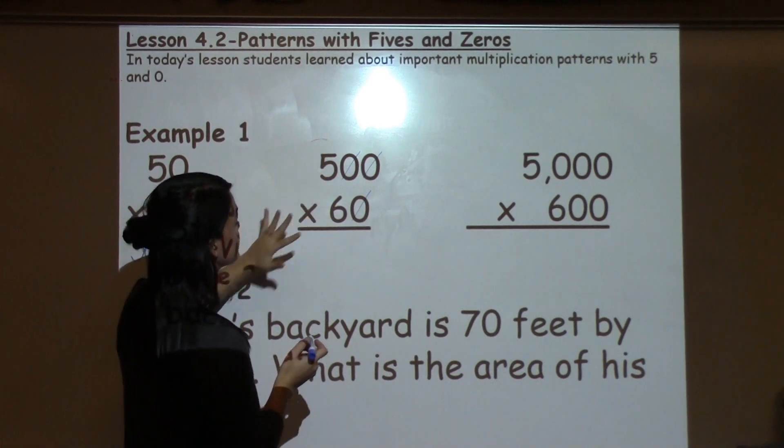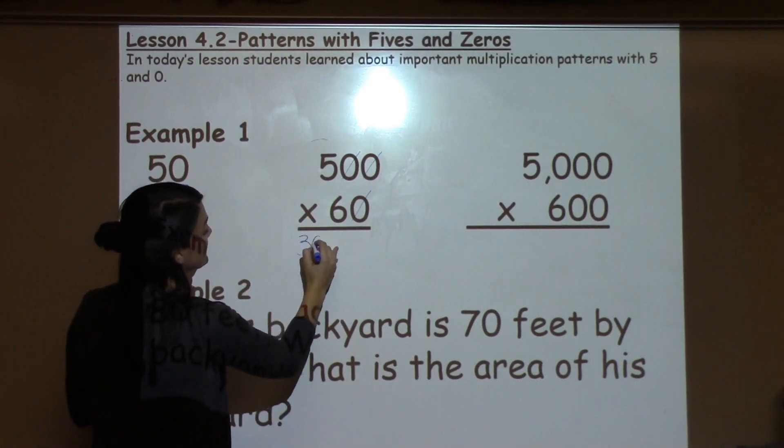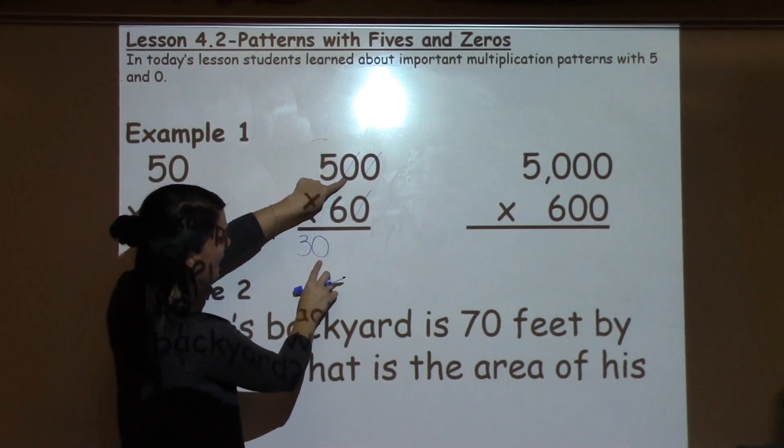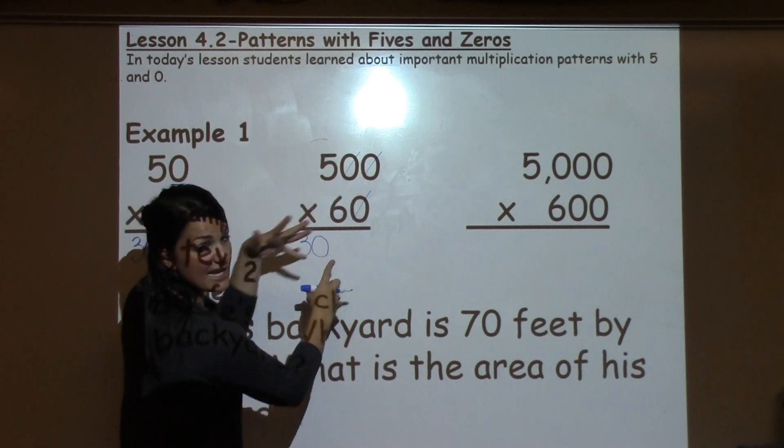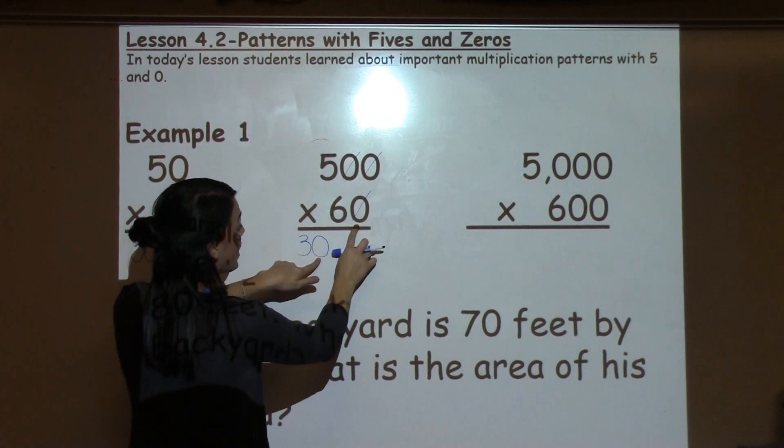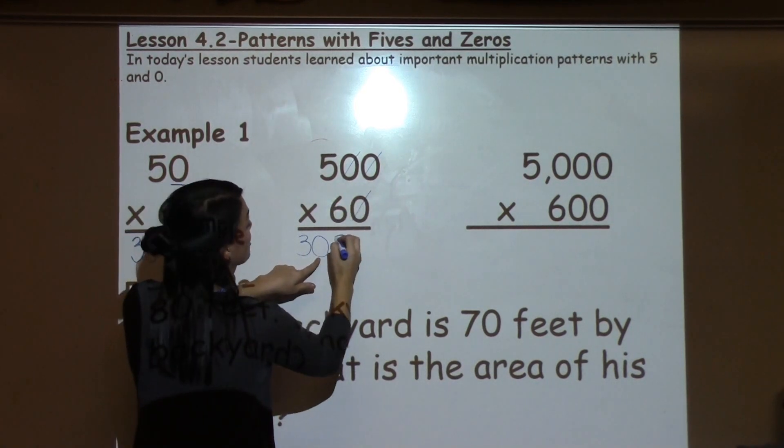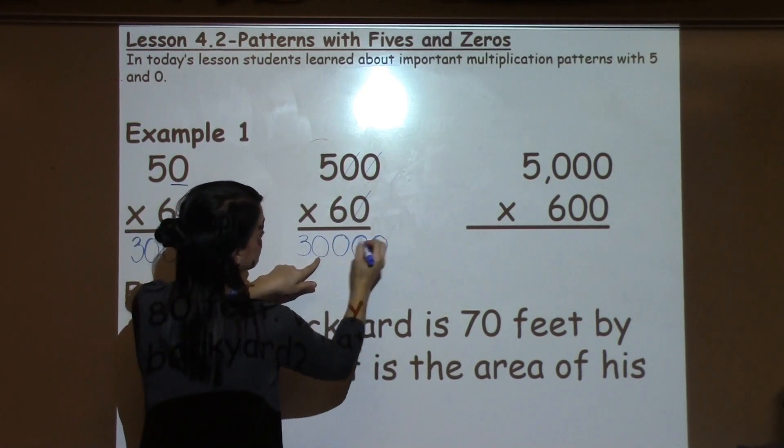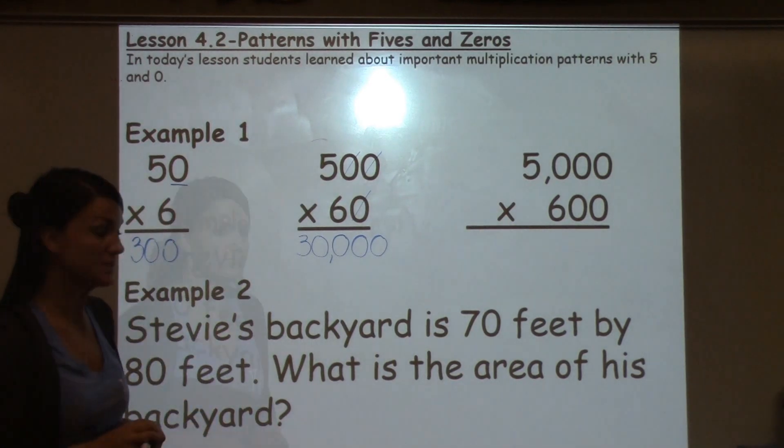Multiplying 5 times 6. 5 times 6 is 30. This is not one of these 0s. It is the fact 5 times 6. So it needs to stay and then I also need to add 3 additional 0s for a final answer of 30,000.